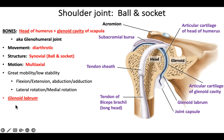The shoulder has a glenoid labrum. The word labrum means lip. These are fibrocartilage lips that surround the edges of the sockets. It's found in the glenoid and also in the hip at the acetabulum. So ball and socket joints have these little lips, and what they do is make the socket a little deeper and help hold and position the head in the glenoid a little better.